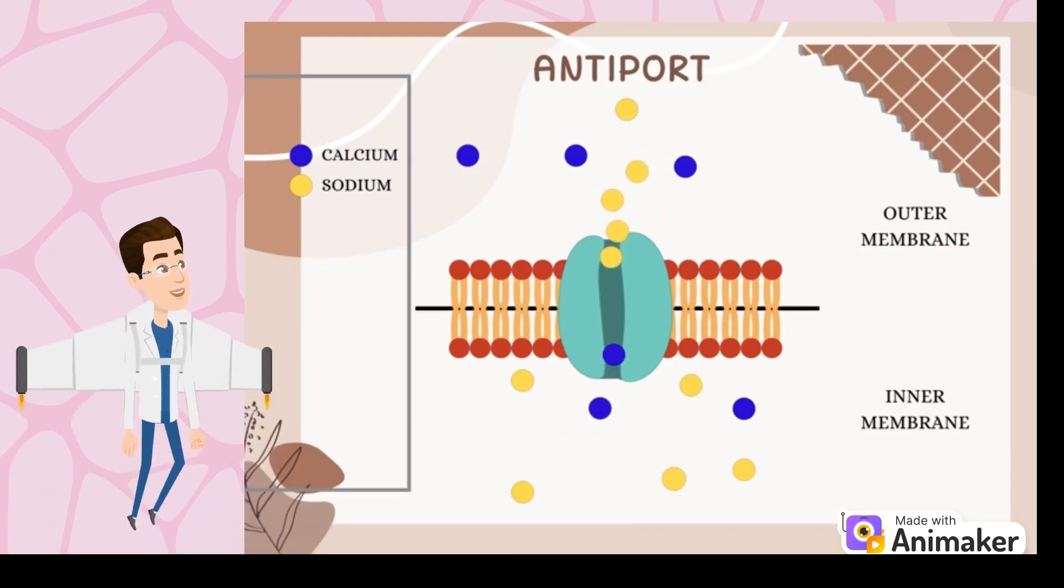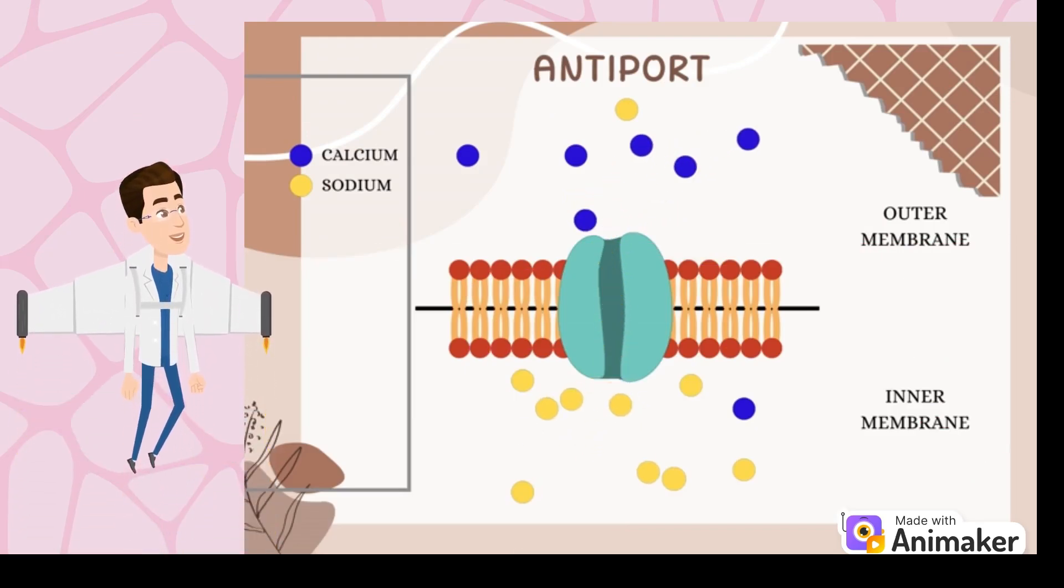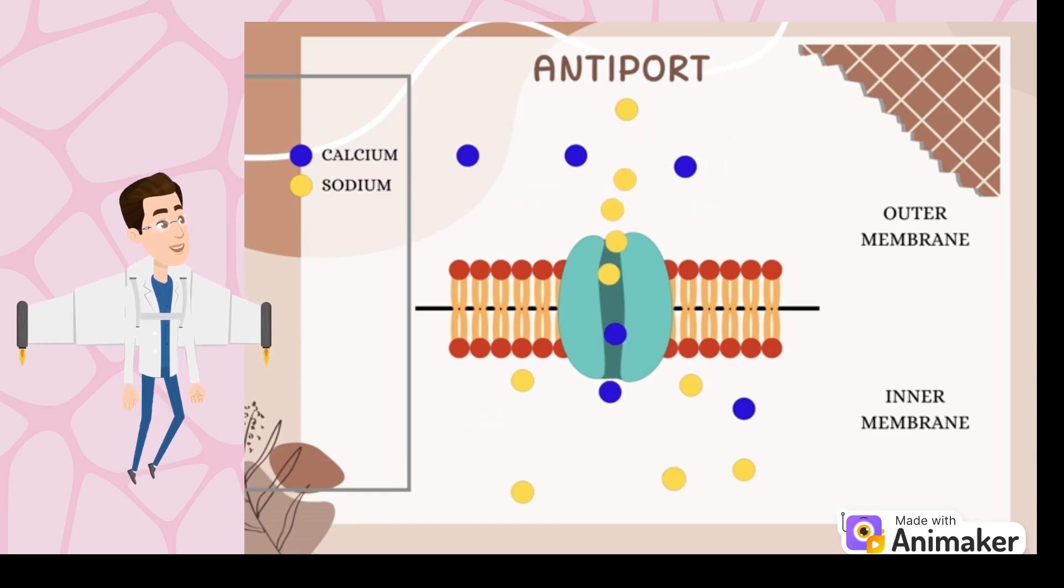In antiport, substances move in opposite directions. For instance, sodium ions move into the cell while calcium ions are pumped out. Sodium's gradient provides the energy to push calcium against its gradient.